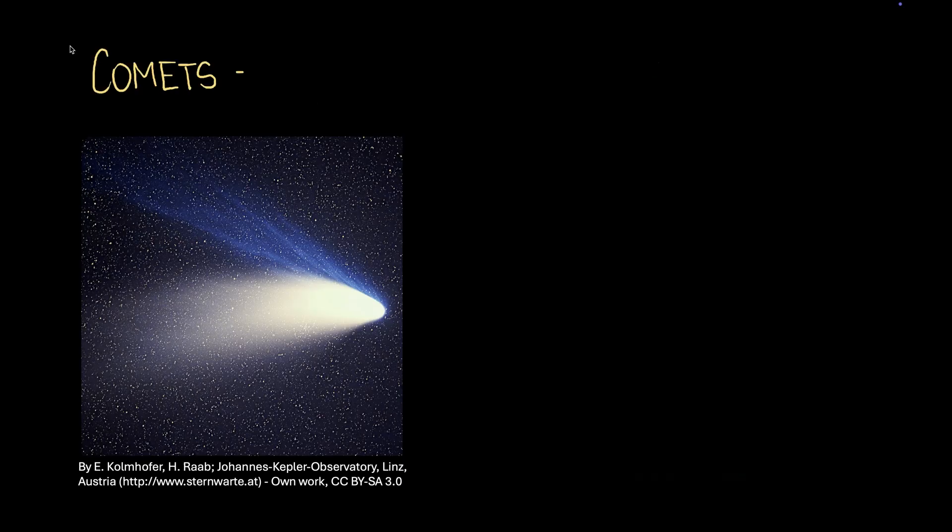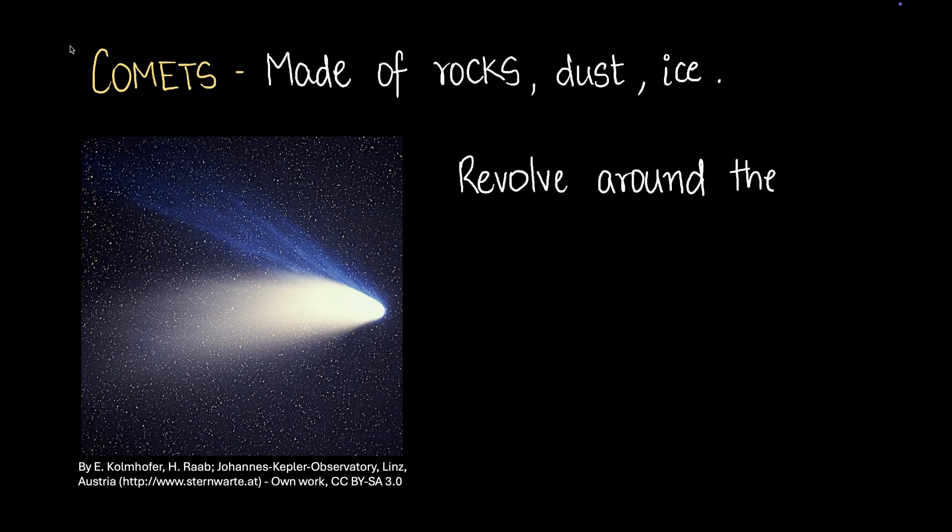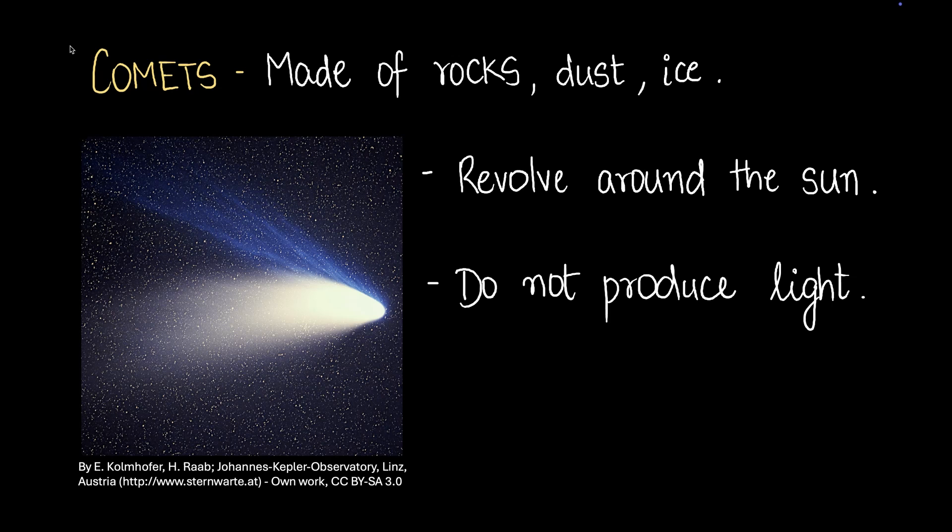Let's start with comets. Comets are made up of rocks, dust, and ice. Comets revolve around the sun, just like the planets, but comets don't produce their own light. So all that fiery, shiny thing that you can see in the picture, that's a reflection of the sun's light. Just like the moon reflects sunlight, comets also reflect the sun's light.